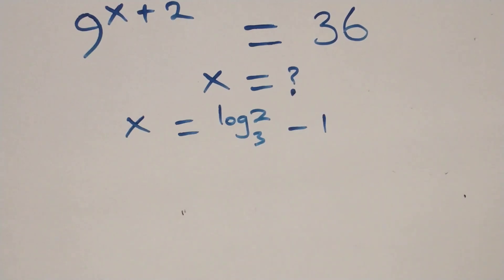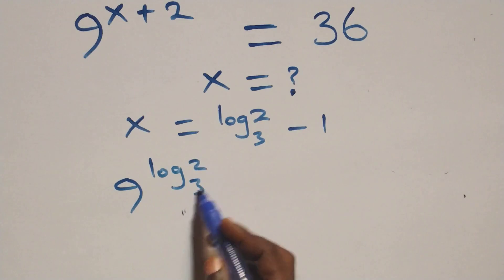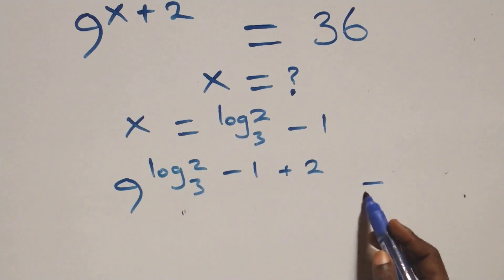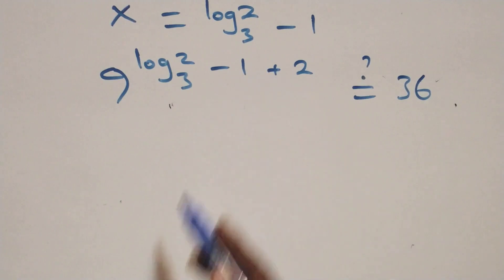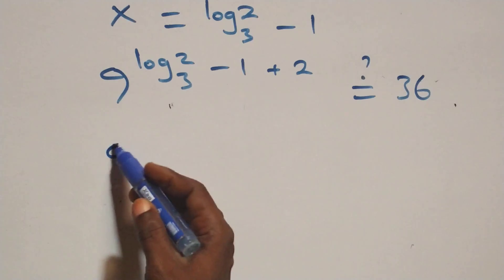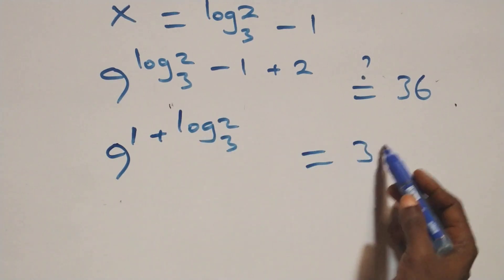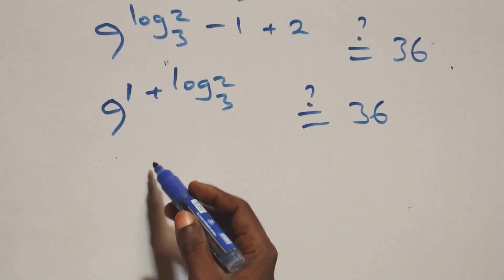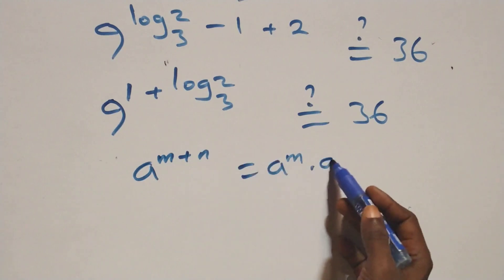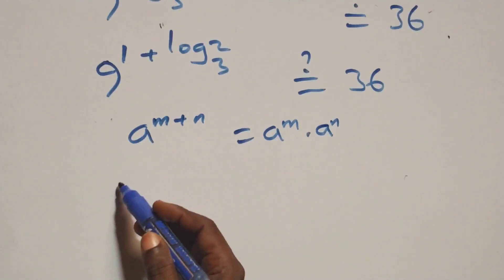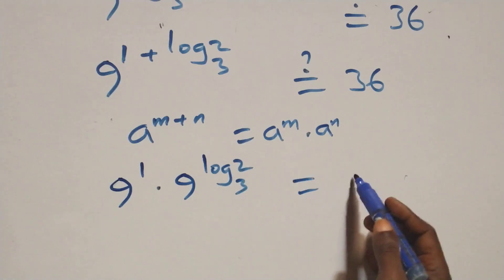What we have here becomes 9 raised to power (log 2 base 3 minus 1) plus 2. That simplifies to 9 raised to power (log 2 base 3 minus 1 plus 2), which is 9 raised to power (1 plus log 2 base 3). Is this equal to 36?